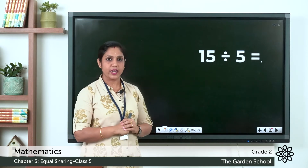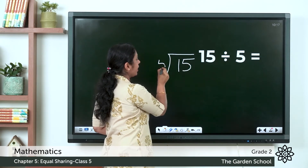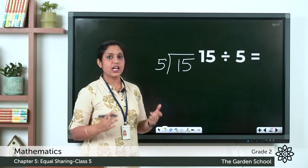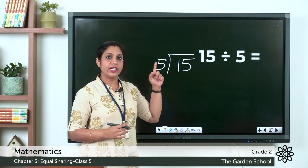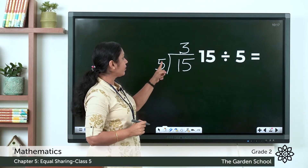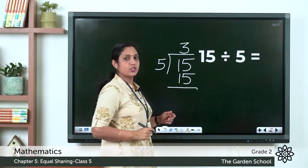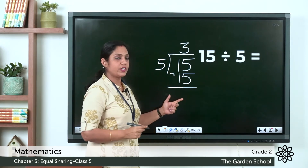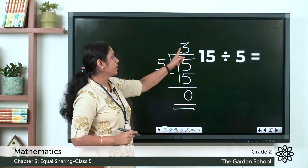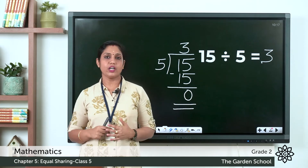Let's do 15 divided by 5. Draw the line, write the dividend inside and the divisor outside. Check the multiplication table of 5 — 5 threes are 15, so write 3 on top. Write 15 below from the multiplication, then subtract 15 minus 15 equals 0. We reach the end of this division and the answer is 3. So 15 divided by 5 equals 3. Now let's learn the long division method.